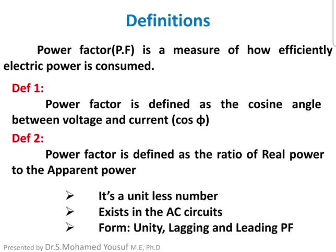Power factor is a unitless number. It exists only in AC circuits — it is a matter of the angle between the voltage and current, so it does not exist in DC circuits. It appears in AC circuits in three different forms: unity, lagging, and leading.